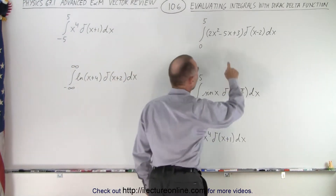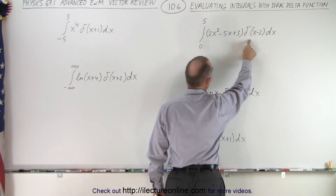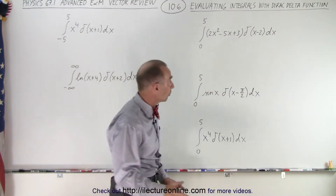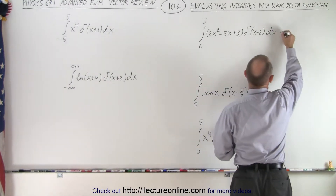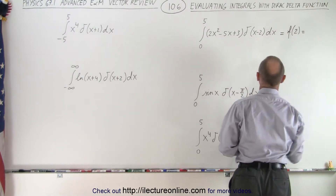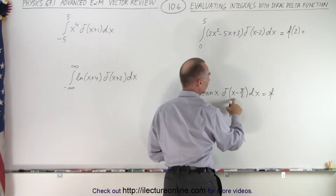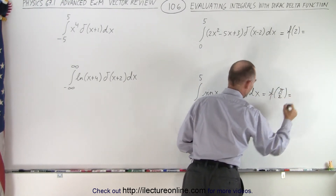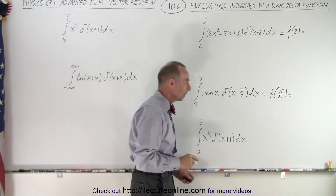Whenever we have something that looks like this, it should be equal to the function evaluated at the value that makes the delta function go to zero. So in this case, where x equals 2, this equals the function when x is equal to 2. And in this case, that would equal the function when x is equal to pi over 2. And here, that would equal the function when x equals negative 1.